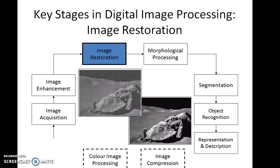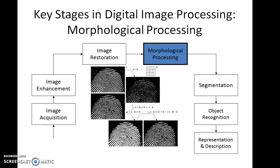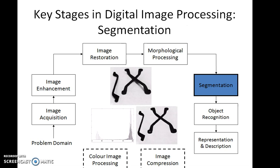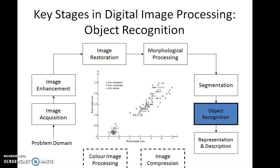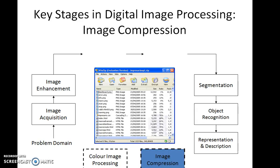Similarly, we have image restoration and morphological processing, where thinning, thickening, closing, and opening operations can be performed on an image to improve its quality. Segmentation is used for identifying sizes of an image, followed by object recognition, representation and description. Compression also plays a very important role in today's world.